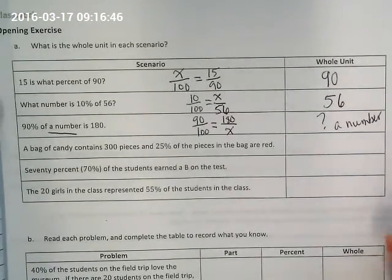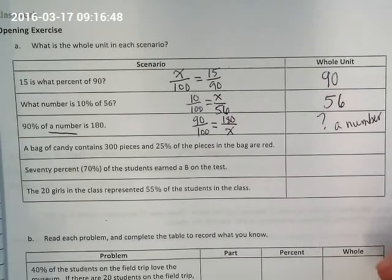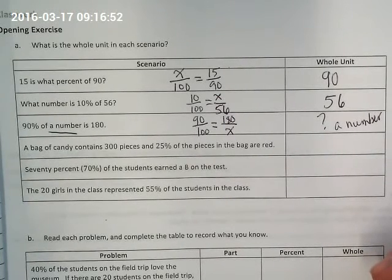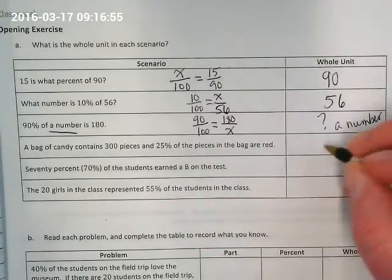A bag of candy contains 300 pieces and 25% of the pieces in the bag are red. What's our whole? 300.